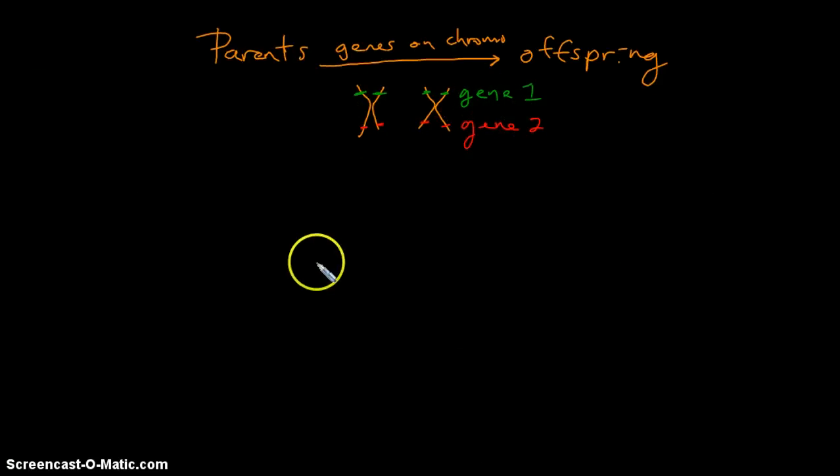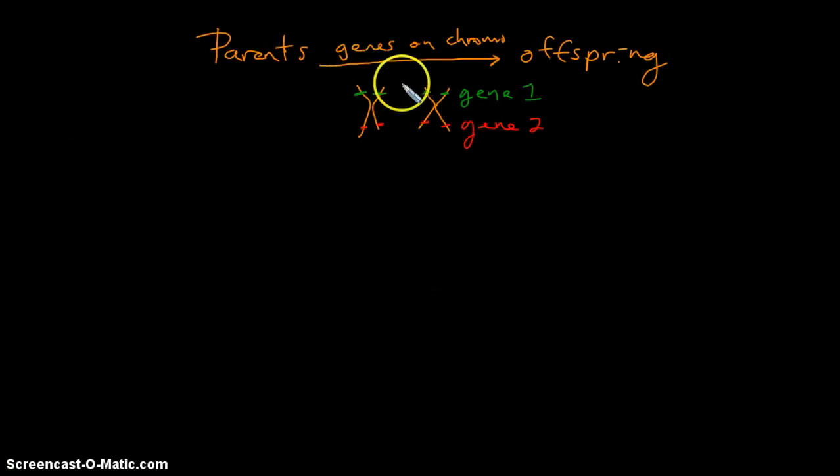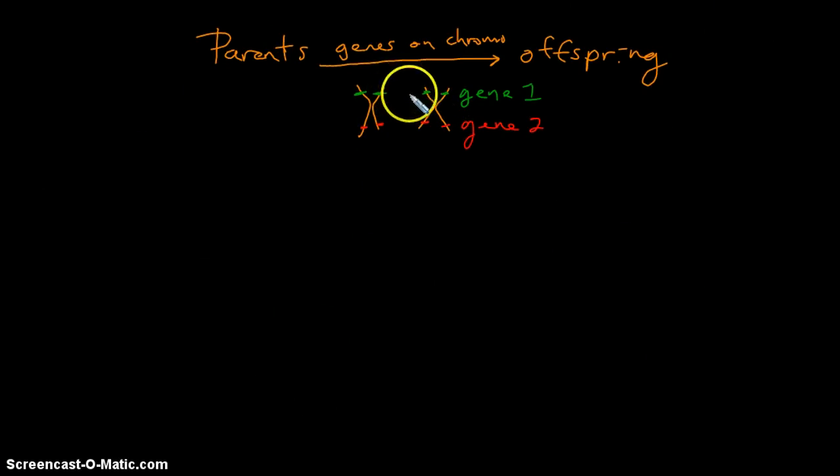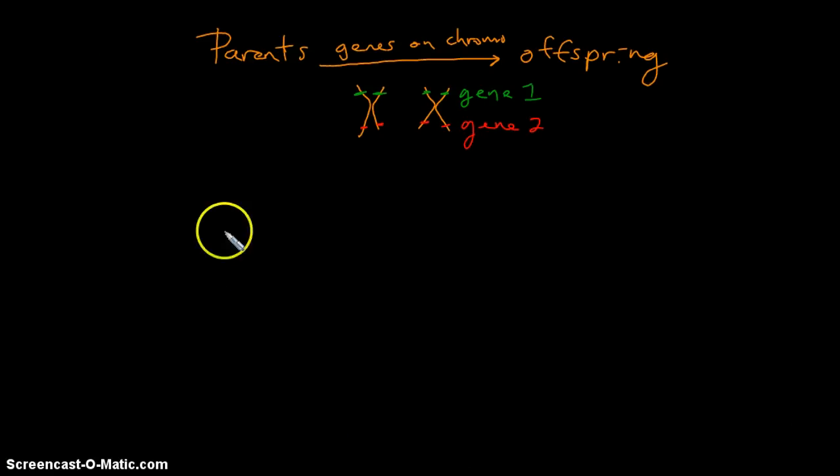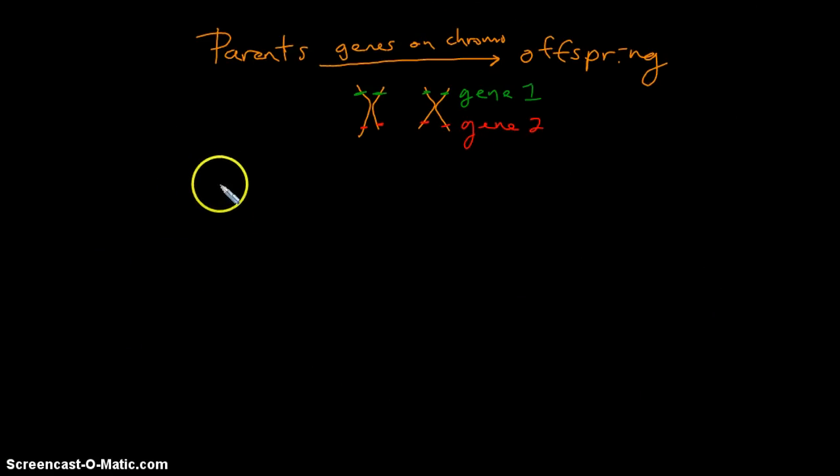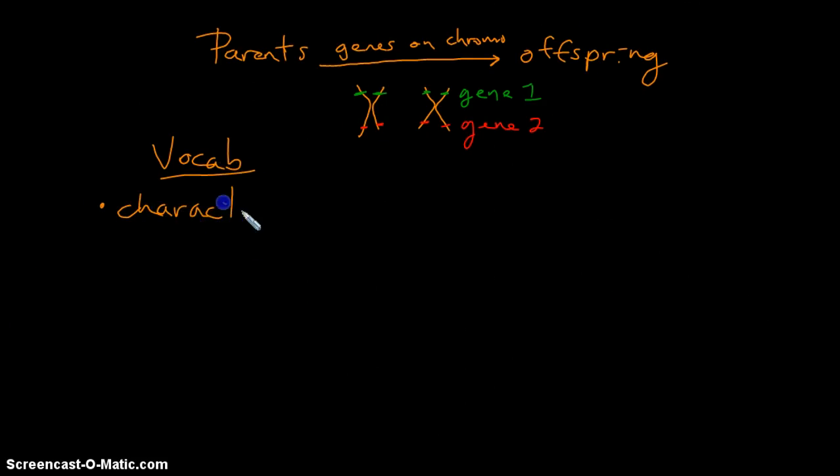So this chapter basically looks at how this information gets passed on to offspring in terms of probabilities. There is some basic vocabulary that we'll focus on in this introductory segment to set the stage for the discussion that we'll have related to inheritance and probability.